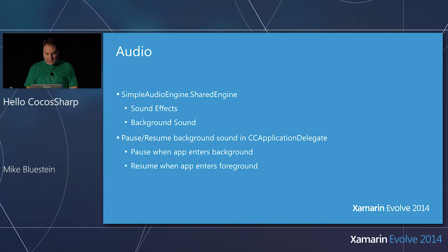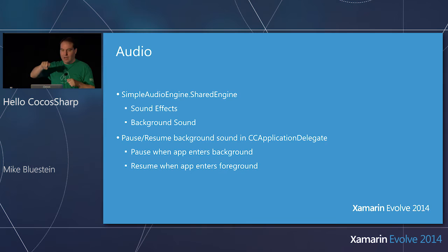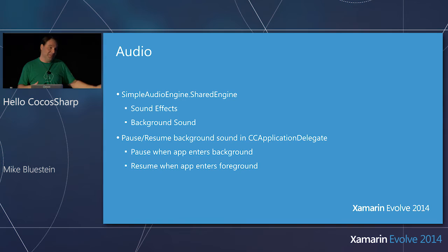Those concepts would be enough to create a simple game, but there's even more. There's a great audio engine built in that's really easy to work with — you access it through Simple Audio Engine shared engine. This is where you can create sound effects, such as when you tap to fire or when there's a collision, and you just create a little sound. Additionally, there's background sound so you can play audio through the entire game.